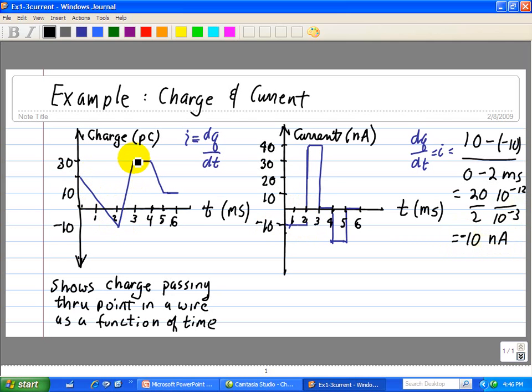Here we have a positive slope, but we're going from minus 10 to 30 in 1 millisecond. So in this case, that equals to 40 nanoamps.